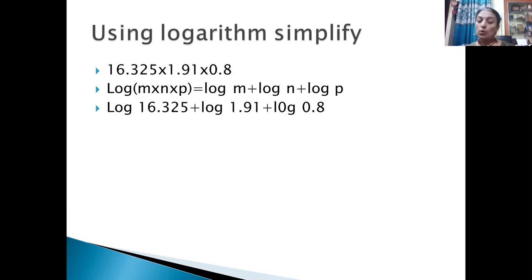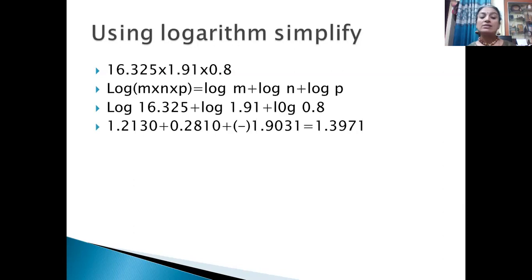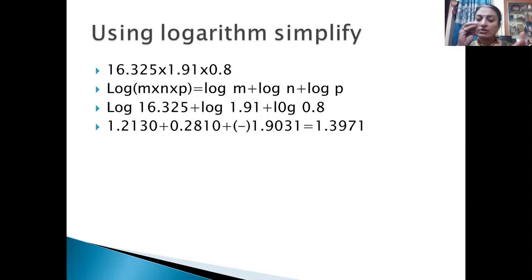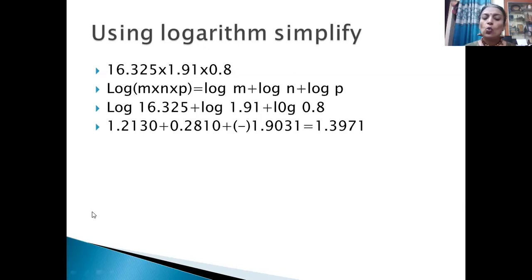For 16.325: before the decimal point there are two digits (1 and 6), so characteristic = 2 − 1 = 1. Neglecting the decimal point, the digits are 1, 6, 3, 2, 5. For row 16, refer the 3rd column, and mean difference 2. The value from the table is 2130. So log 16.325 = 1.2130.